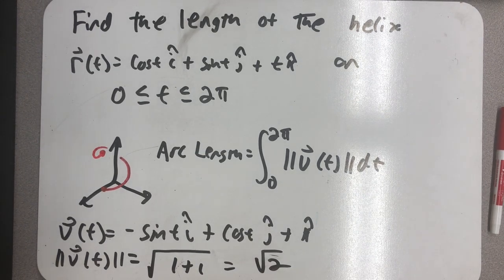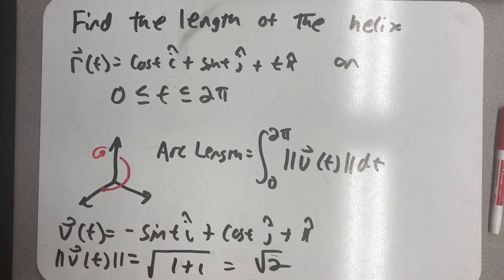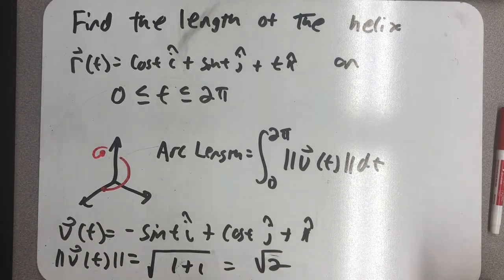Okay, so we have a constant speed. Not all speeds are constant, but that makes this arc length very easy to find.